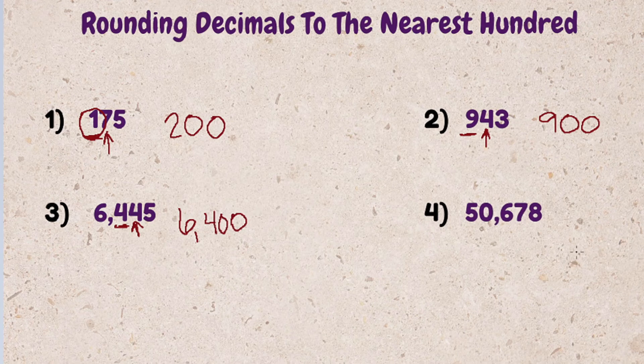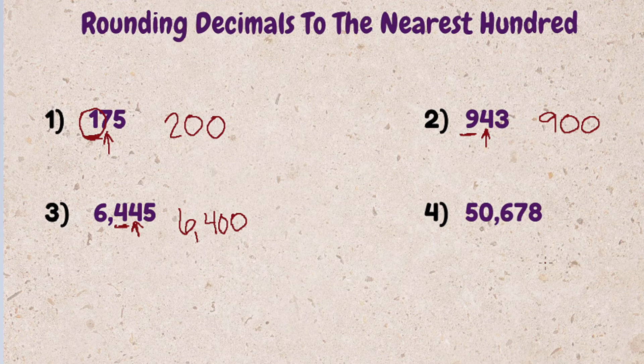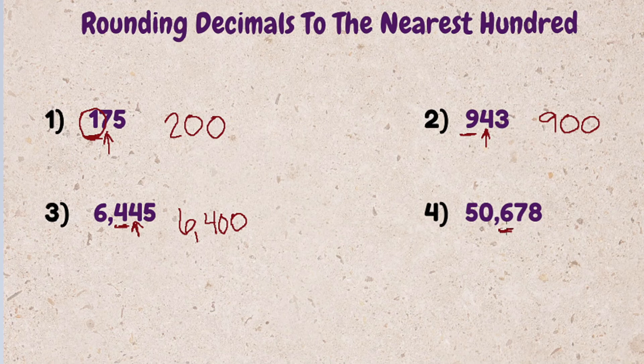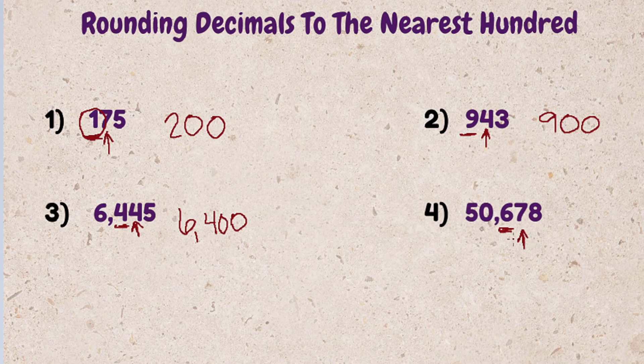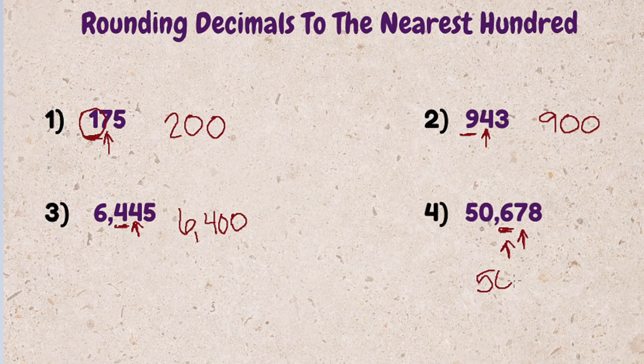Last example. 50,678. First thing is identify our hundreds place digit. The digit to the right is 7. 5 or greater, this rounds up. So 50,678 rounded to the nearest hundred is going to be 50,700.